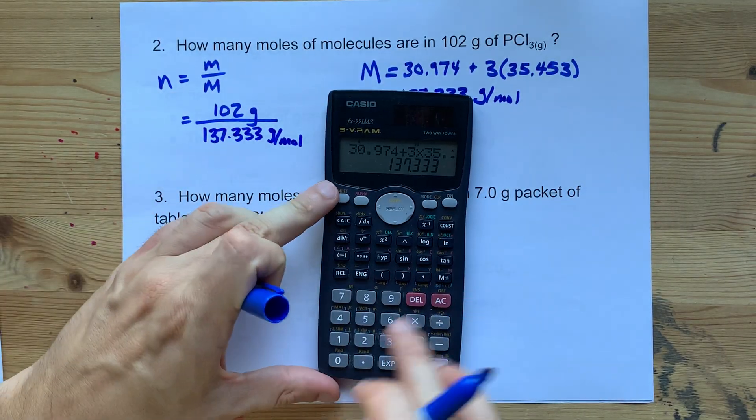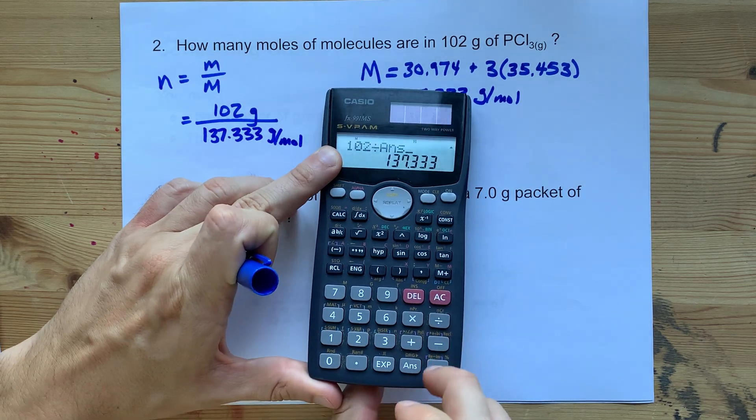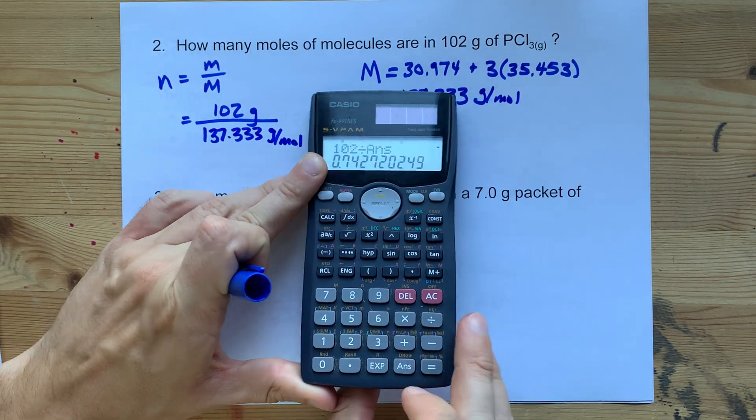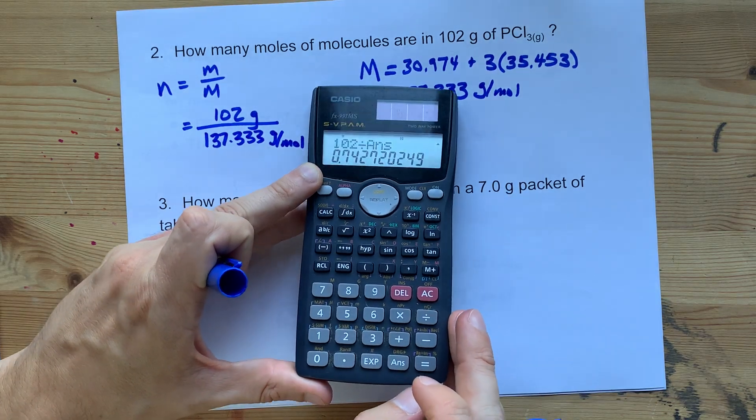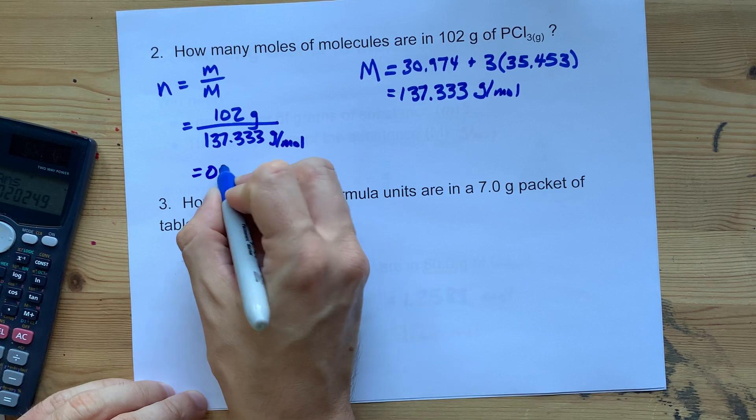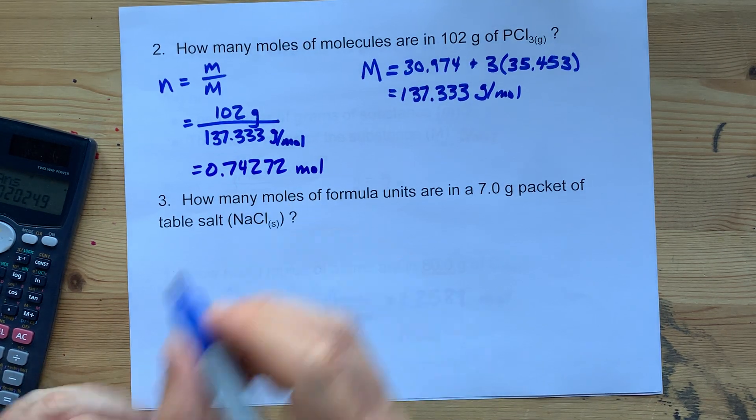The number of moles is 102 divided by that molar mass that we just calculated. That gives me 0.74272. That is in moles.